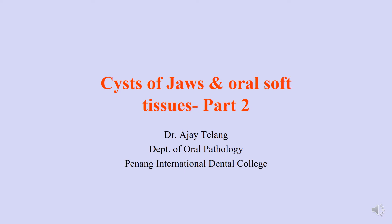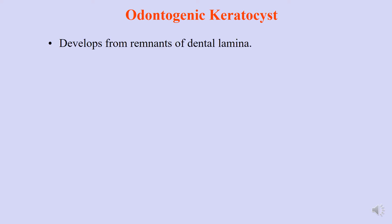Hello everyone and welcome to Cysts of Jaws and Oral Soft Tissue, Part 2 of the lecture. Today's topic is the odontogenic keratocyst, which is a developmental cyst. Recalling from the previous lecture, there are two types of cysts in the jaws: developmental and inflammatory. Last time we discussed dentigerous cyst; this time we will discuss odontogenic keratocyst, which develops from the remnants of the dental lamina scattered throughout the jaws.